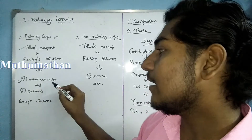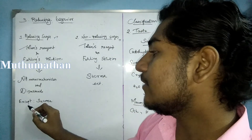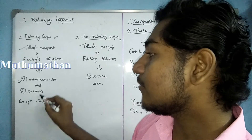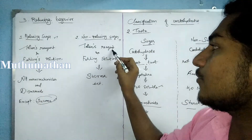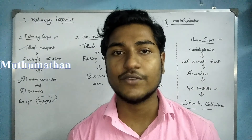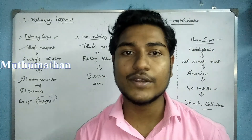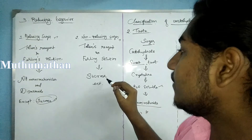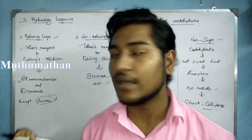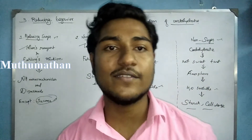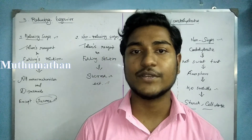For reducing sugars, examples include monosaccharides and most disaccharides. However, sucrose is a disaccharide that is a non-reducing sugar — it does not give a positive Tollens' or Fehling's test. So we classify carbohydrates by hydrolysis, taste, and reducing behavior. That's the first classification. Check the links in the description for more. Thank you, friends.